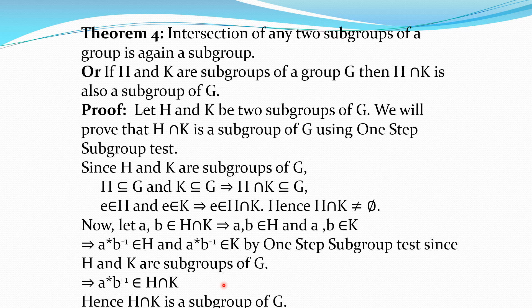Let H and K be two subgroups of G. To show H∩K is a subgroup of G, we use the one-step subgroup test. First, H∩K must be a non-empty subset of G. Since H ⊆ G and K ⊆ G, we have H∩K ⊆ G. Now, H and K are both subgroups of G, so both contain the identity element e of G. Therefore e ∈ H∩K, so H∩K is non-empty.